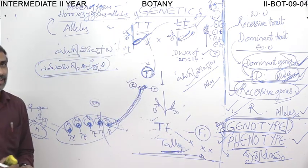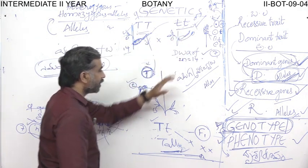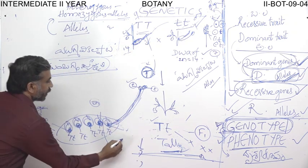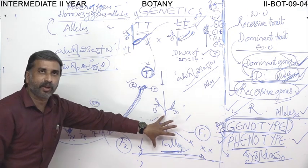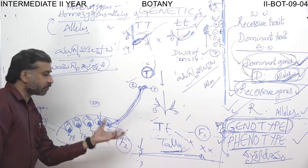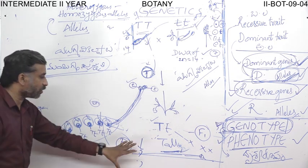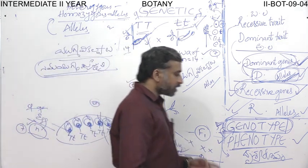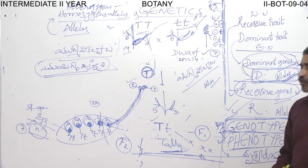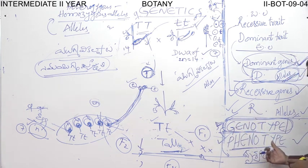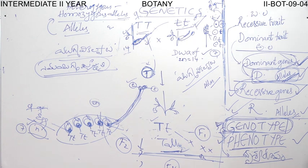So far we have ascertained the genotypes of the parental plants and the genotype of the F1 plant. Now what about the F2 plants? Whenever F1 tall plants are self-pollinated, seeds collected and grown, those plants become F2 plants. In F2, both tall and dwarf plants appear. What is the genotype of those plants and what is their ratio? We will discuss this in the next session.